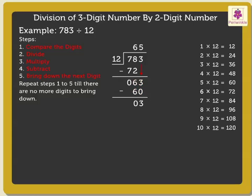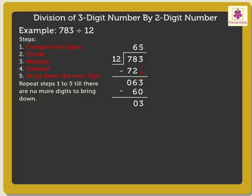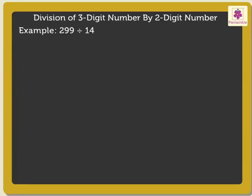Now, as there are no more digits to bring down, we have finished our division. Thus, we get the quotient as 65 and remainder as 3. Now, let us solve one more example.